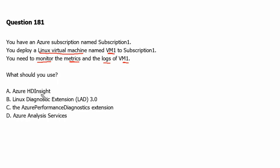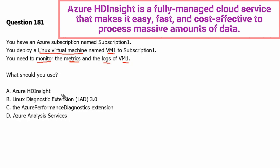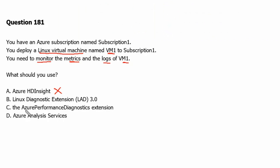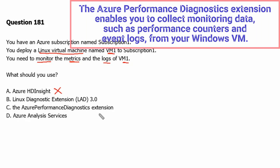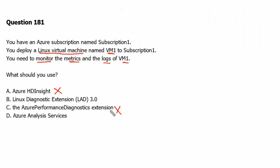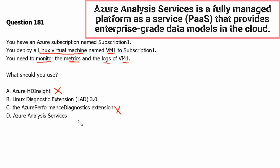Option A: Azure HDInsight. Azure HDInsight is a fully managed cloud service that helps in processing massive amounts of data. Therefore this is not the correct answer. Option C: the Azure Performance Diagnostic Extension. The Azure Performance Diagnostic Extension enables collecting monitoring data such as performance counters and event logs from Windows virtual machines, therefore it cannot be used with a Linux virtual machine. Option D: Azure Analysis Services is a fully managed platform-as-a-service that provides enterprise-grade data models in the cloud, therefore it cannot be used to monitor metrics and logs for VM1.